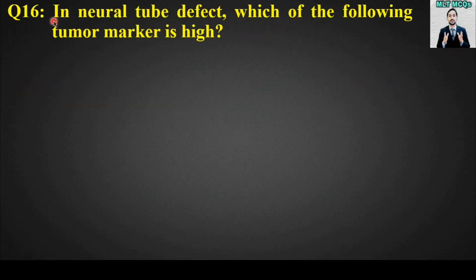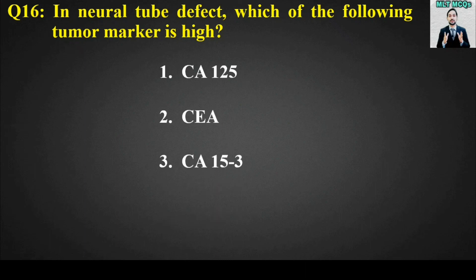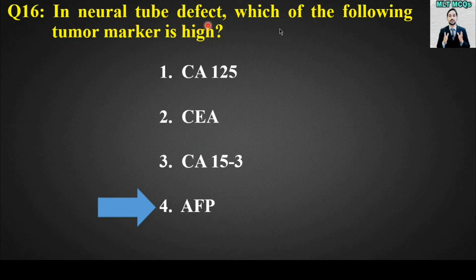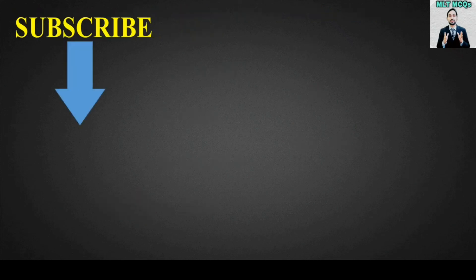The last MCQ: In neural tube defect, which of the following tumor markers is high? Options are CA-125, CEA, CA-153, or AFP. The right answer is option number four: AFP. AFP is the tumor marker that is elevated in neural tube defect.